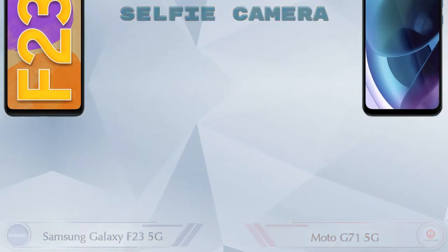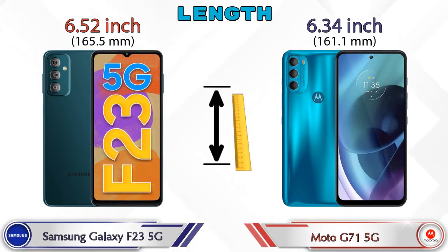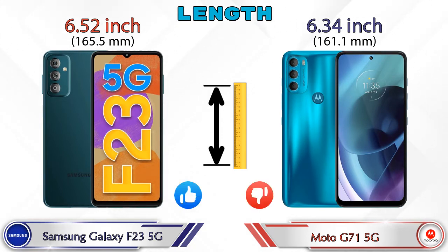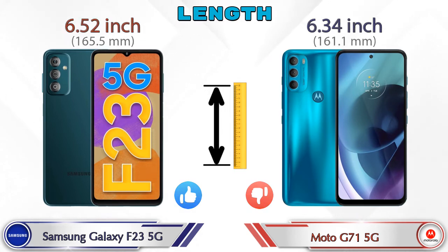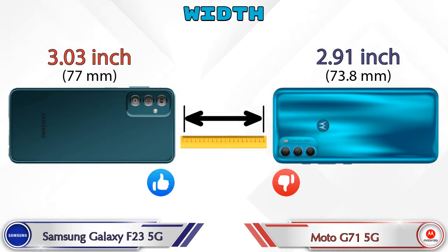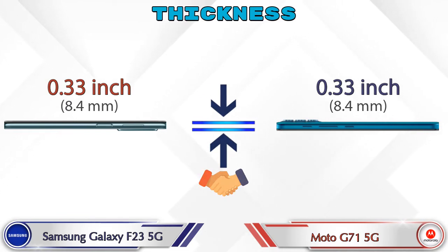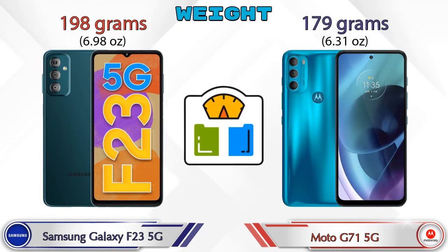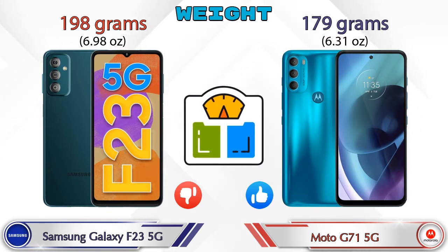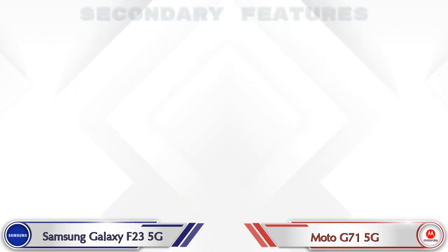Now let's check the dimensions. Talking about length, the Galaxy F23 5G is 6.52 inches and the G71 5G is 6.34 inches, which is less than the Galaxy F23 5G. Width: the Galaxy F23 5G is 3.03 inches and the G71 5G is 2.91 inches, also less than the Galaxy F23 5G. Both phones have the same thickness of 0.33 inches. Talking about weight, the Galaxy F23 5G is 198 grams and the G71 5G is 179 grams.